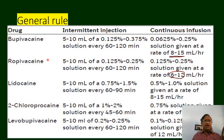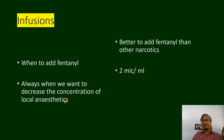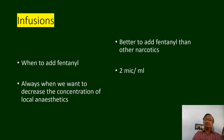General rule: bupivacaine 8 ml per hour of 0.25% — I always add fentanyl. When to add fentanyl? Always, when we want to decrease the concentration. It is better to add fentanyl than other narcotics because giving morphine as an infusion is a little risky. If you want to give morphine, a single dose is enough; top up with lignocaine or bupivacaine.